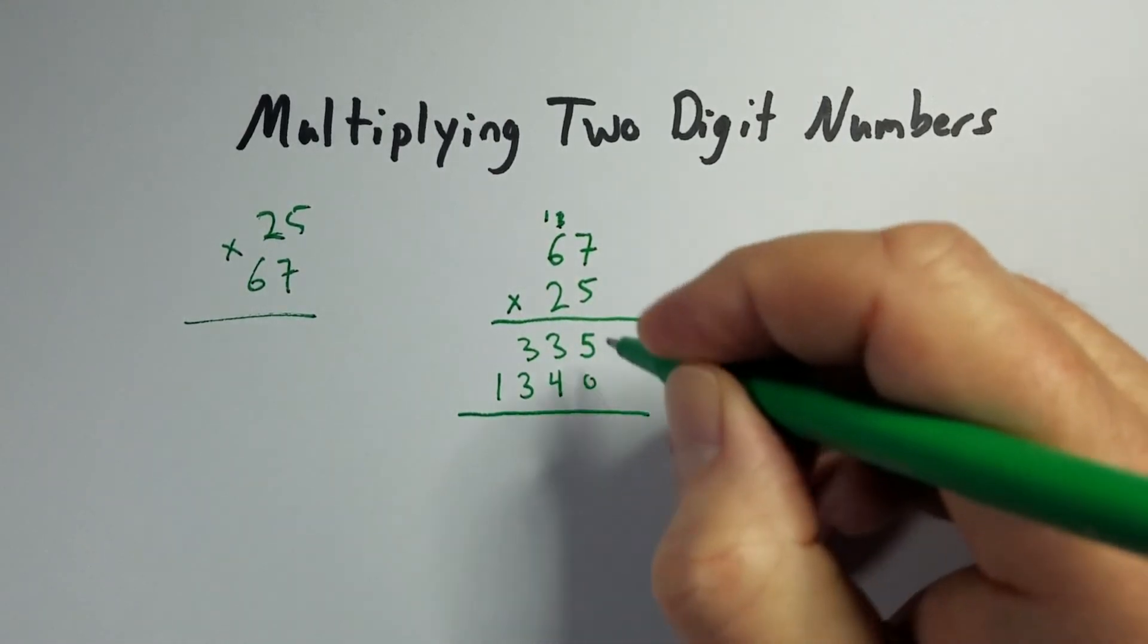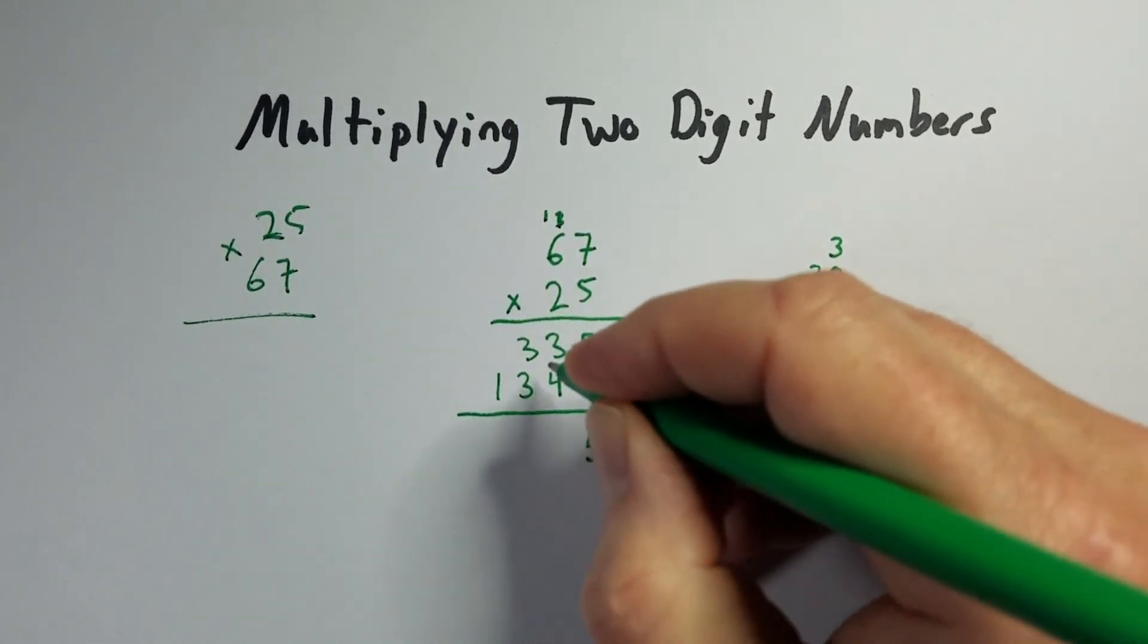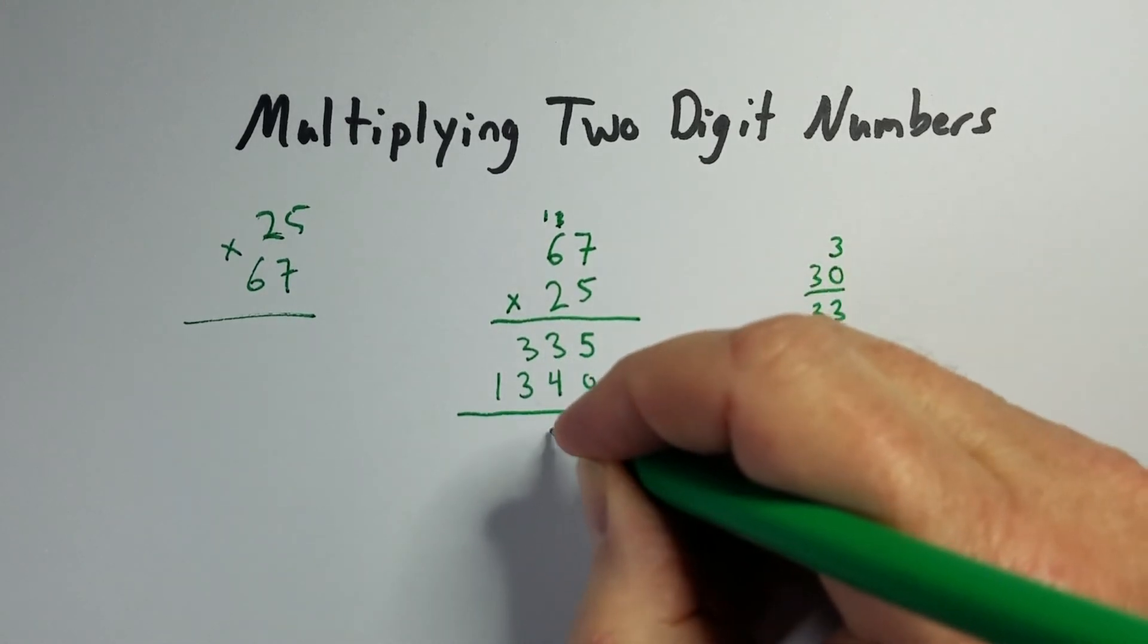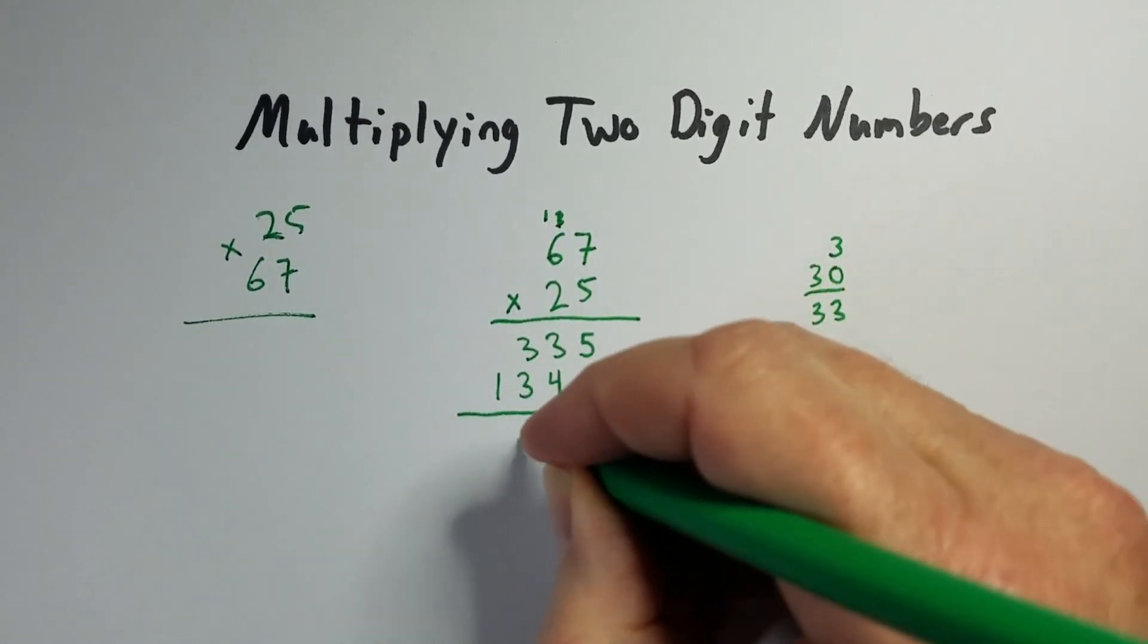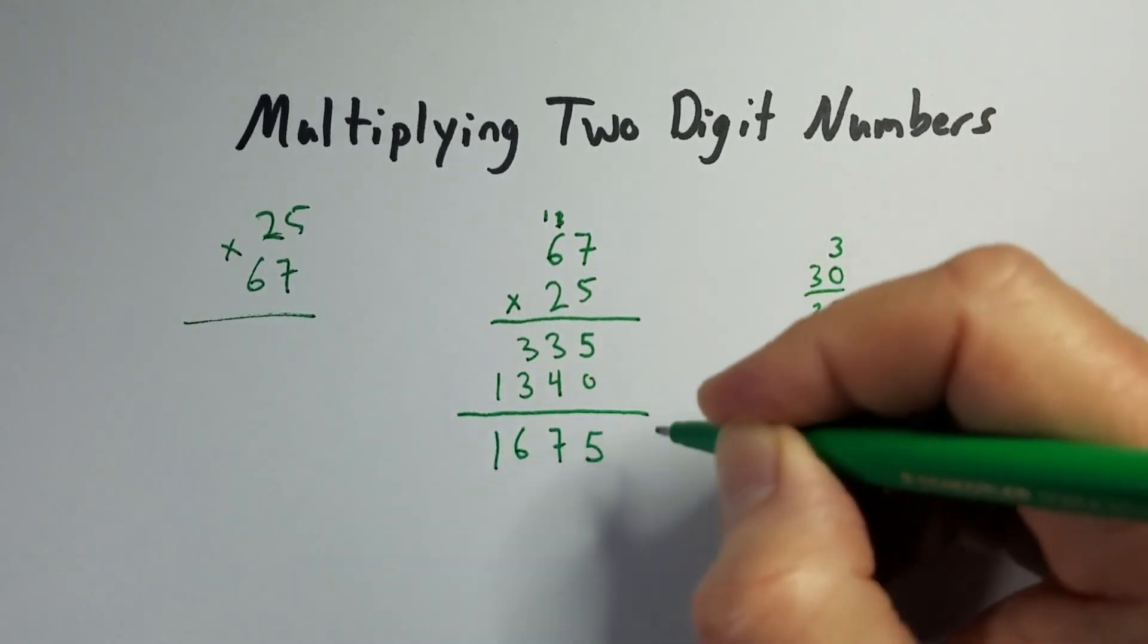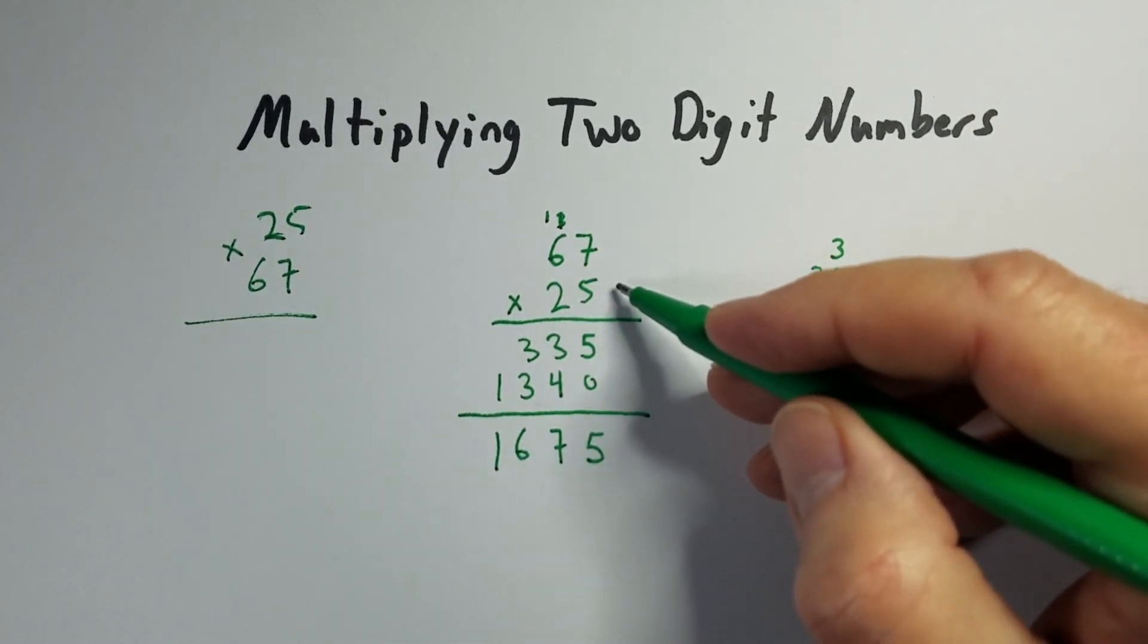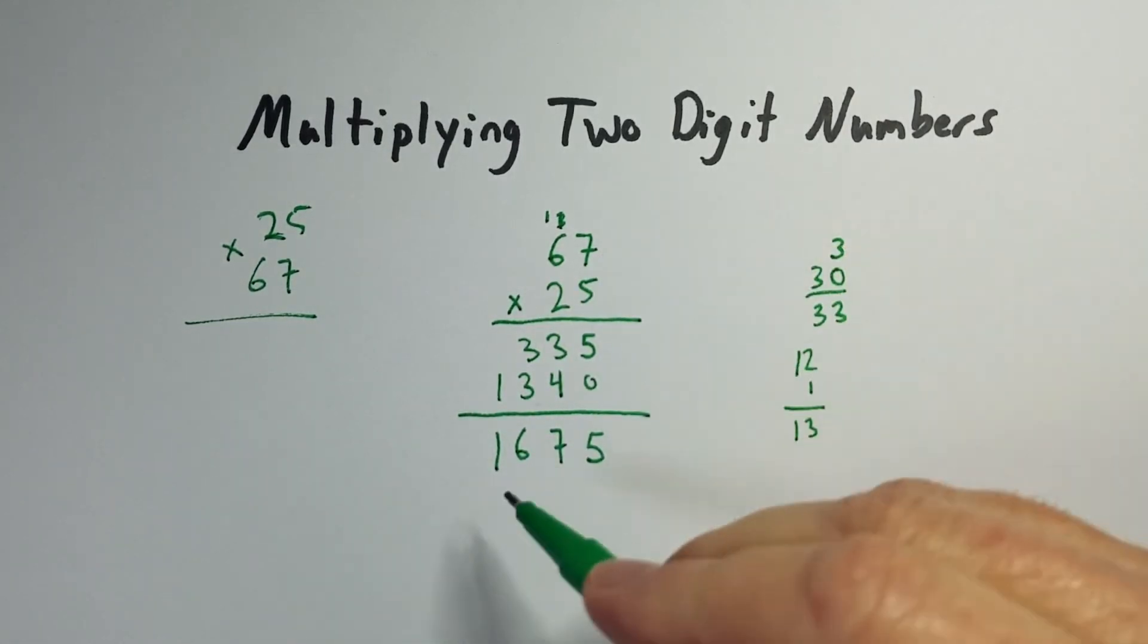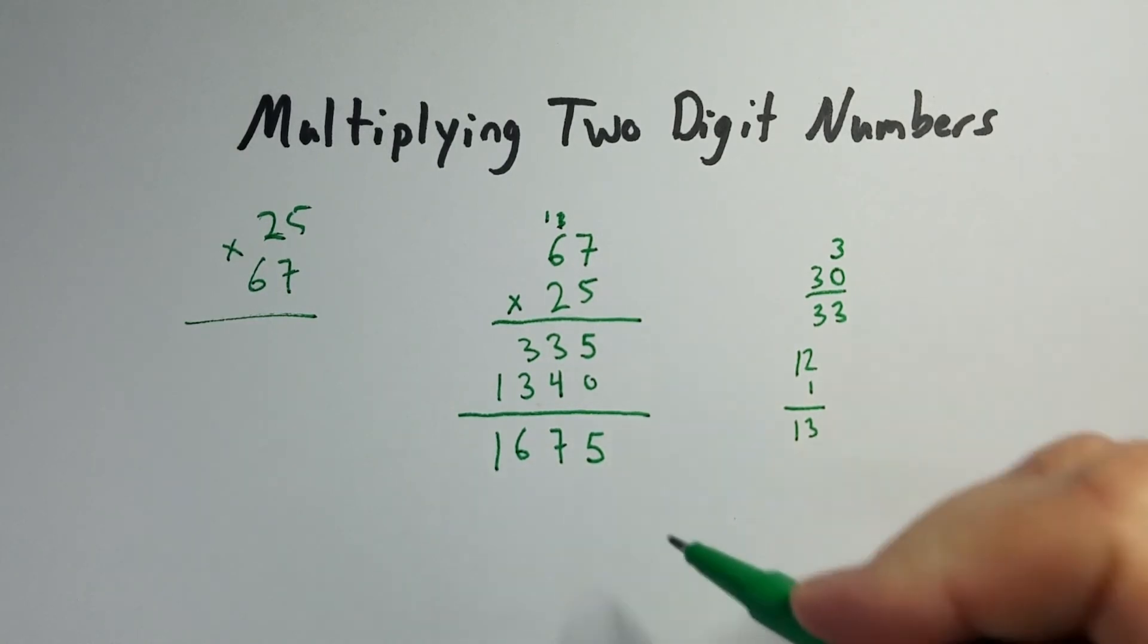And then we can add those numbers up. So that would be 5, 4 plus 3 is 7, 3 plus 3 is 6. And bring the one down. So 67 times 25, or 25 times 67, gives us 1,675.